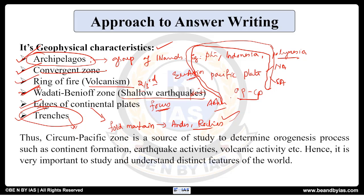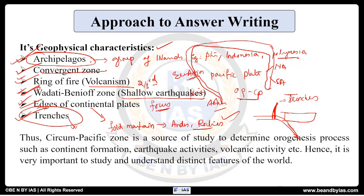Finally, trenches — this region is also known for a lot of trenches; the Mariana Trench is one example you can give. Trenches form here because where there is an oceanic plate and a continental plate, when the oceanic plate subducts, along this line of subduction you get shallow earthquakes, and at the particular location where the boundary forms, trenches are created. So you can see all these geophysical characteristics in the Circum-Pacific Zone. For all of these, you must provide examples.